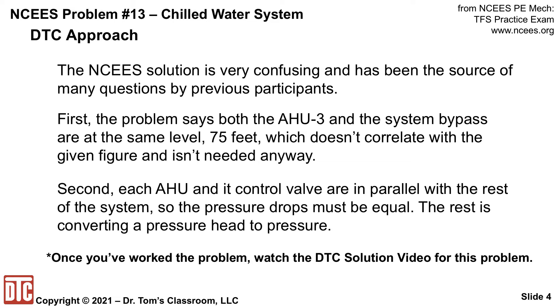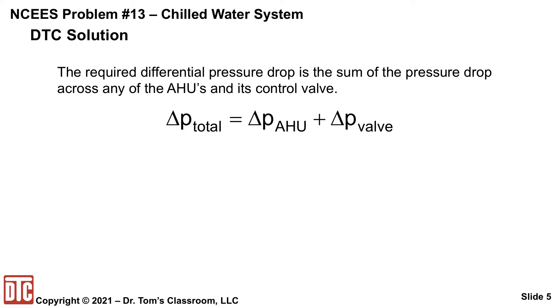Okay, let's see what we really need to do here. Well, the required differential pressure drop is the sum of the pressure drop across any of the AHUs and its control valve. So the total pressure drop is a combination of the pressure drop across the air handling unit plus the pressure drop across the valve, and we're given the valve is 5 psi.